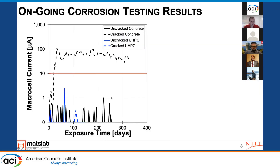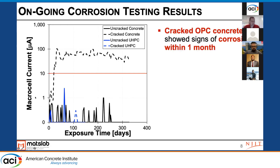What I'm sharing here are representative plots — a lot of this data is ongoing. We're looking at exposure time on the x-axis versus macro cell current on the y-axis, which is in log scale. The 10 microamps red threshold line indicates that anything above this line would indicate potentially active corrosion. The black dashed line is cracked concrete, a mixture typical of something built in the U.S. in the early nineties. On the bottom, you're seeing uncracked and cracked data for UHPC as well as an uncracked concrete specimen. The cracked ordinary Portland cement concrete showed signs of corrosion very early on — within roughly a month.